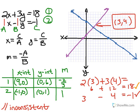Sometimes also the lines are the same line. If we find that that's the case, we call that a dependent system.